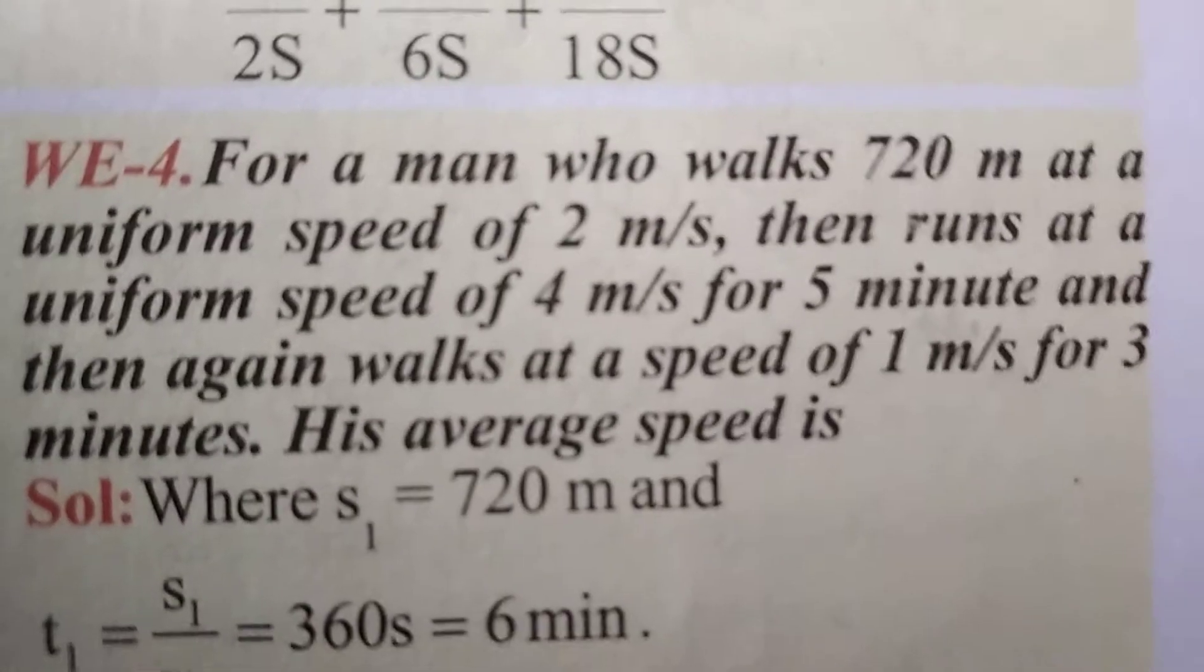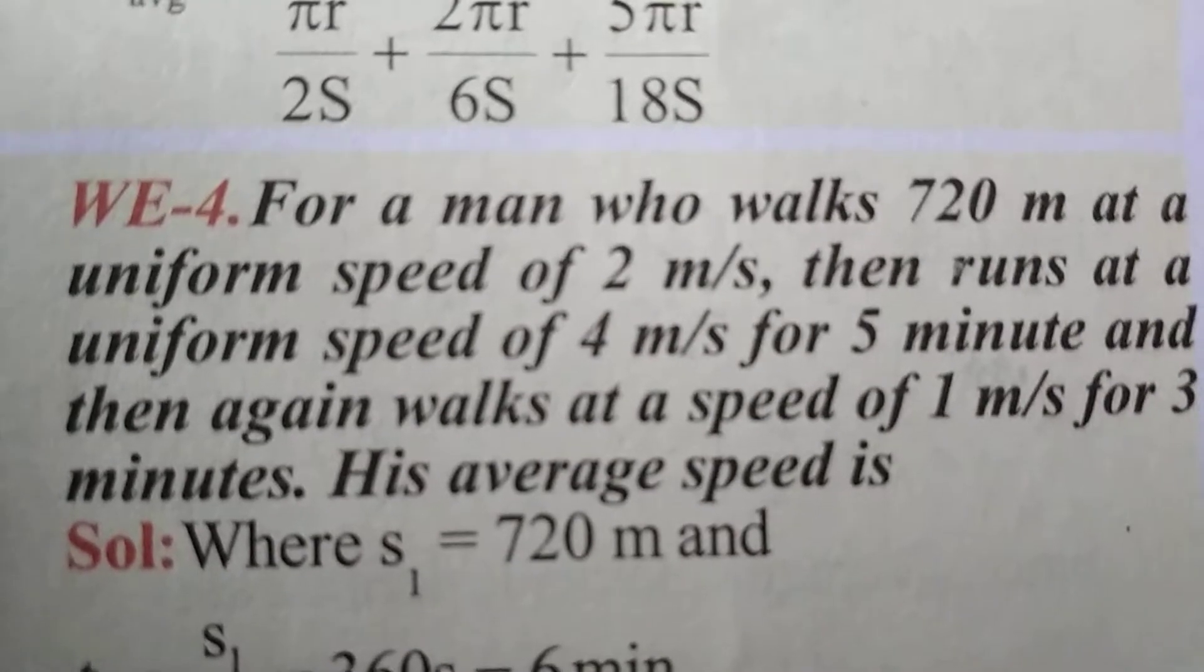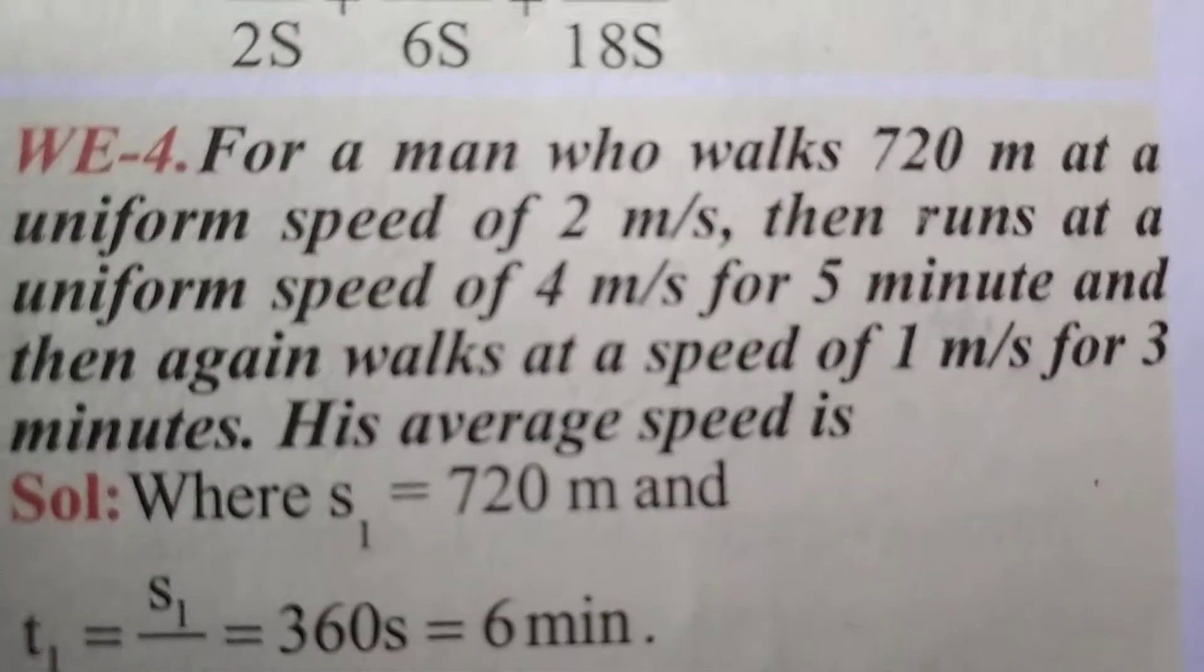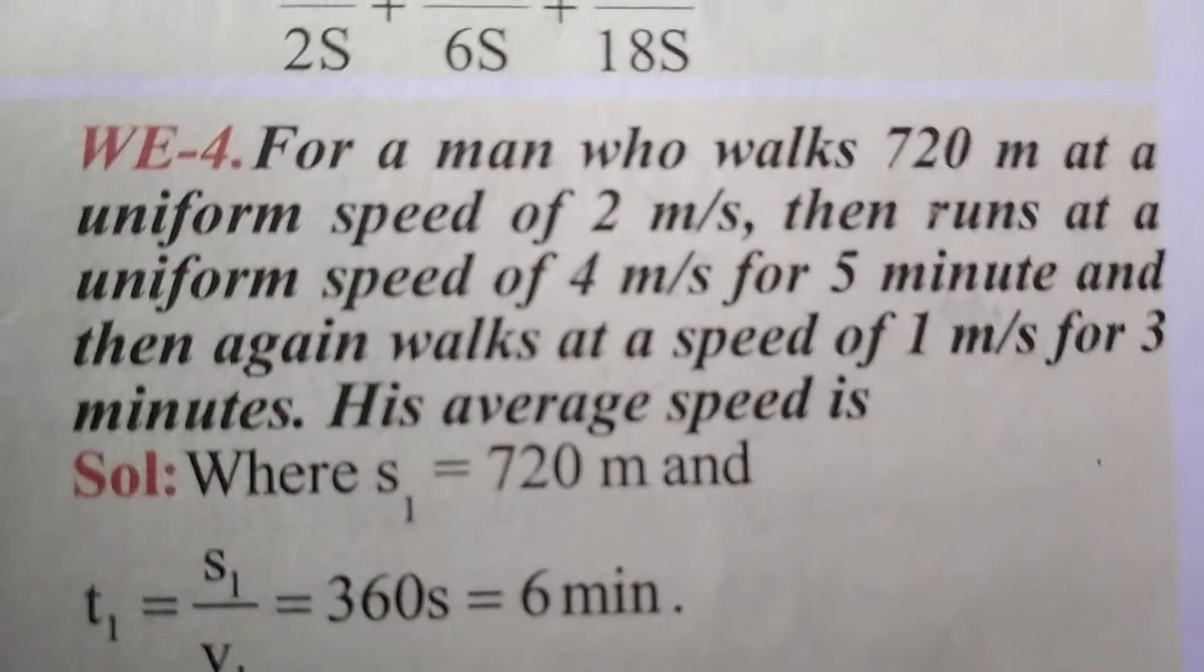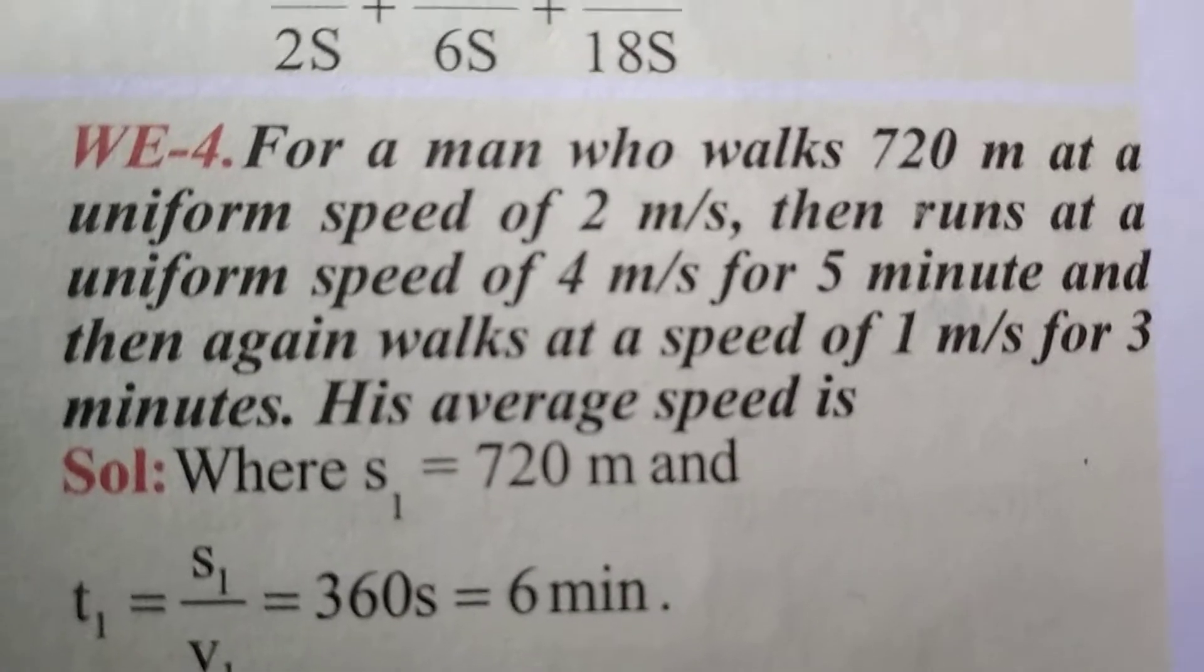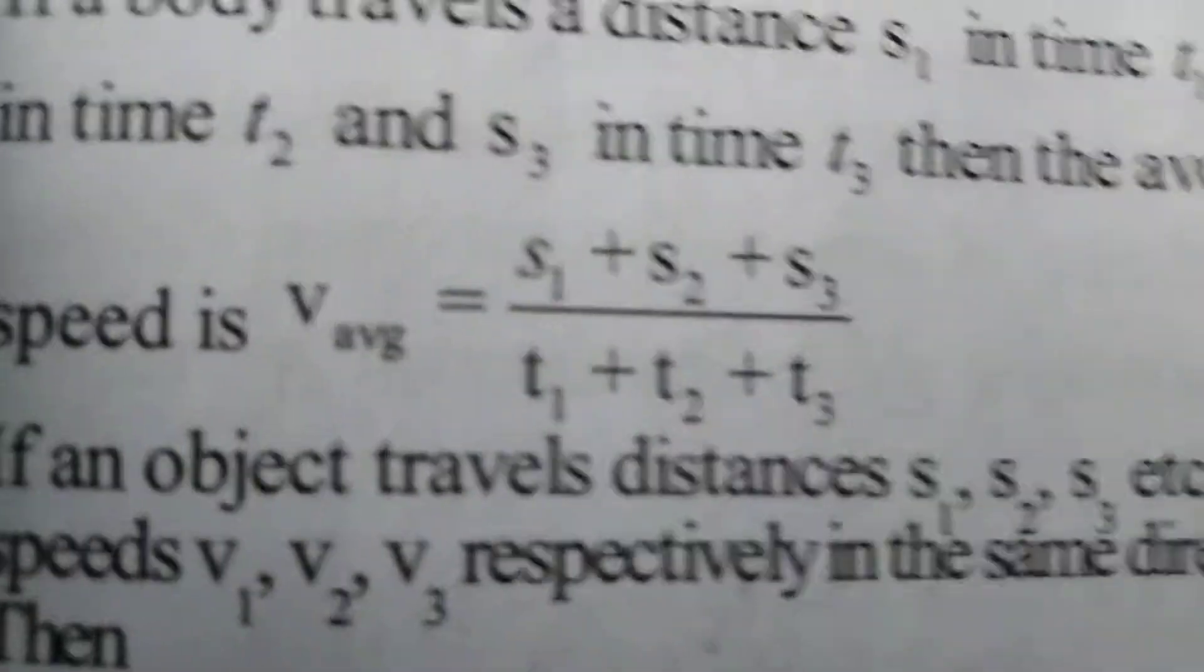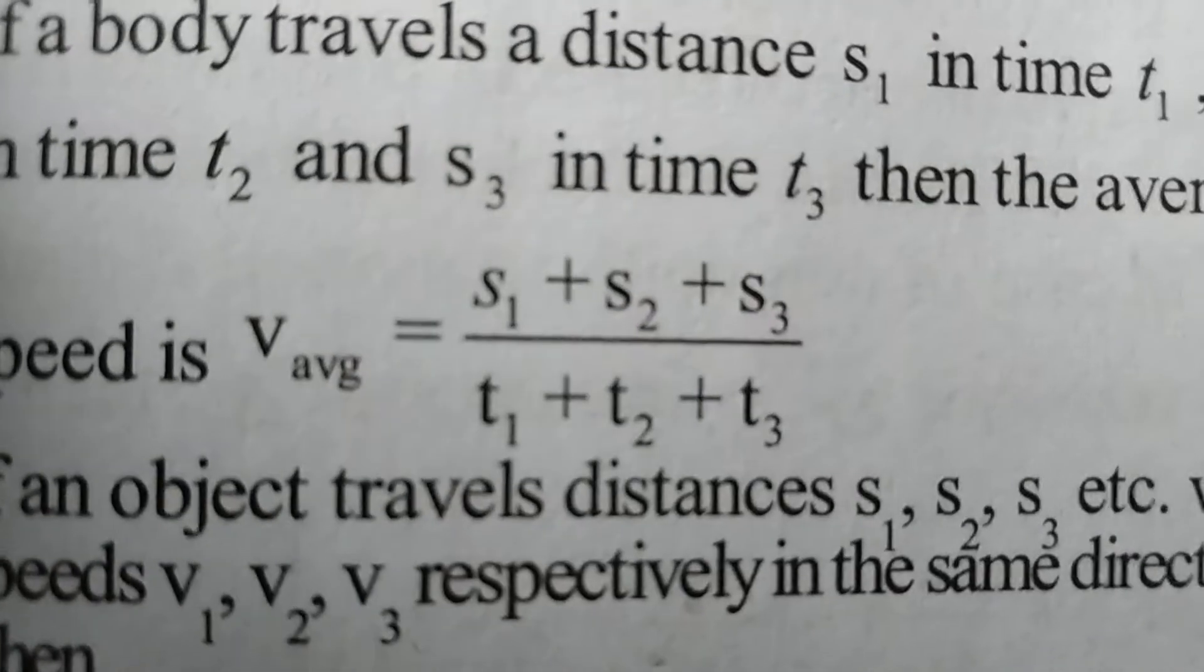Hello guys, today we are going to discuss this problem raised on average speed. As you all know, average speed equals total distance traveled by total time taken. We can write this as average speed = (s1 + s2 + s3) / (t1 + t2 + t3).